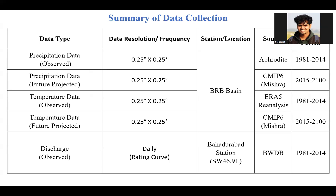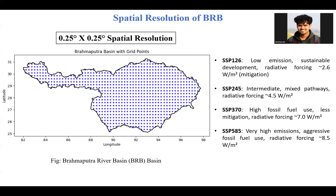This is a summary of data collection. Historical precipitation data was collected from the APHRODITE website. Historical temperature data was collected from ERA5 reanalysis data. Future precipitation and temperature were collected from CMIP6. Discharge data was collected from the BWDB rating curve. Both historical and future data are at 0.25-degree spatial resolution.